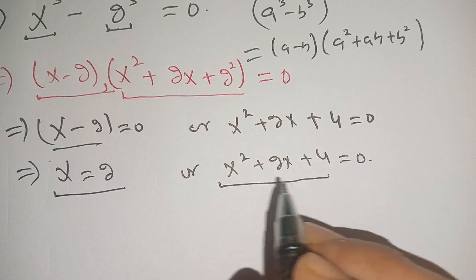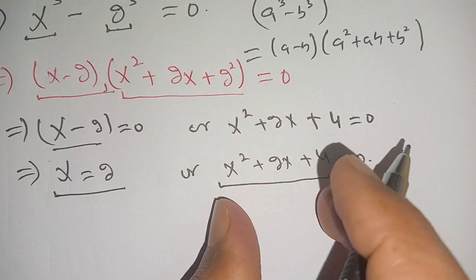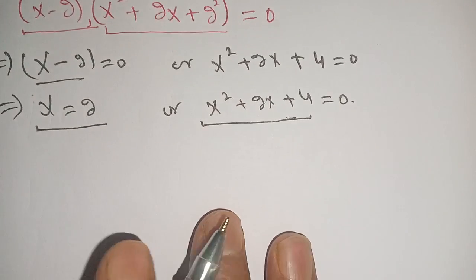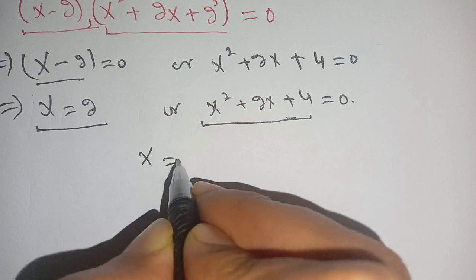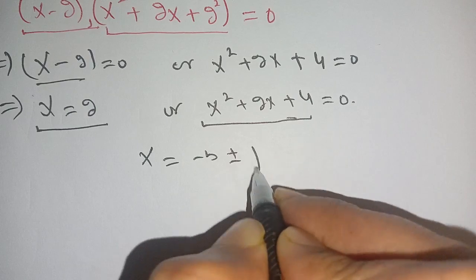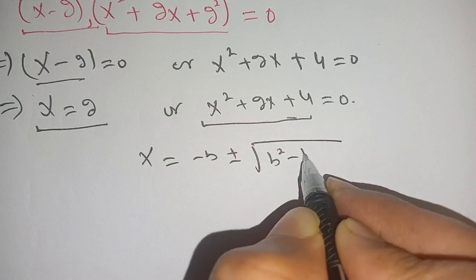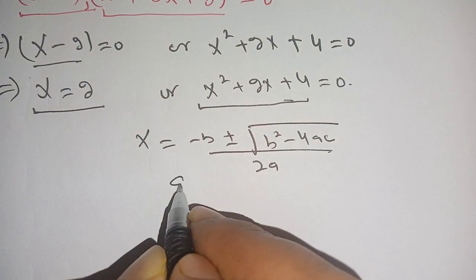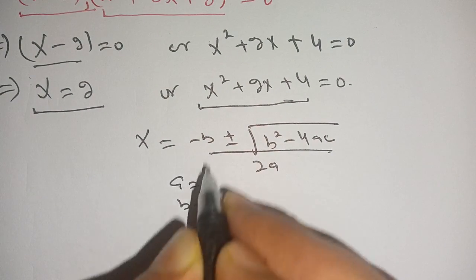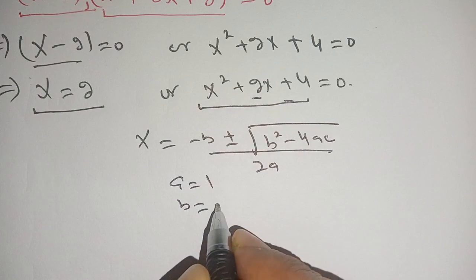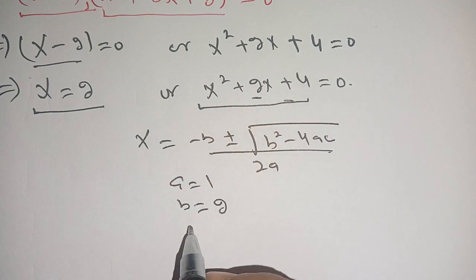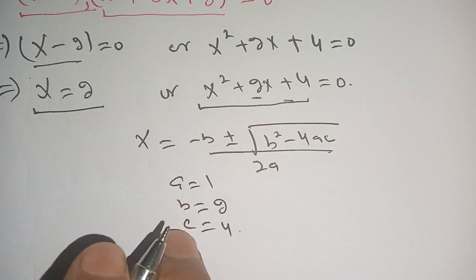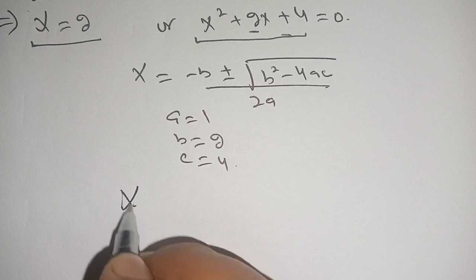This second expression is a quadratic equation. We use the quadratic formula to find the roots. We know that x equals minus b plus or minus square root of (b squared minus 4ac) divided by 2a. Here a equals 1, b equals 2, and c equals 4.